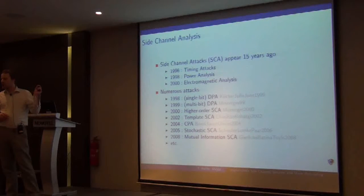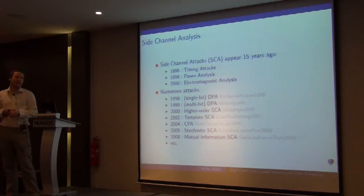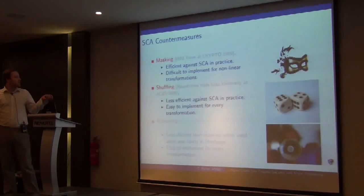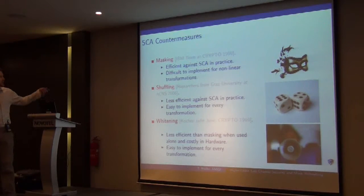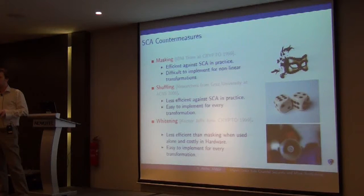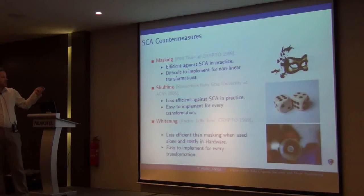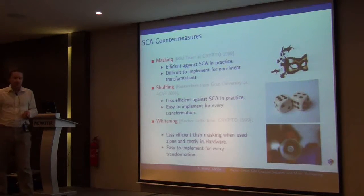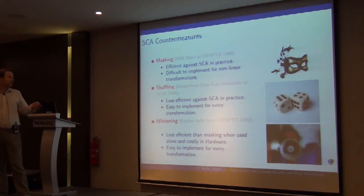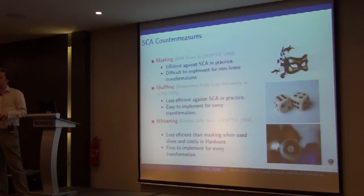We will mostly talk about higher order side channel analysis, meaning that we will consider that the attacker is able to observe several internal states during the cryptographic execution. The main countermeasures against side channel analysis are the masking techniques, shuffling and hiding. We will talk about masking here, which is certainly the most secure way to counteract side channel analysis, but still pretty expensive in practice. Shuffling and hiding are cheaper techniques but don't enjoy security proofs as masking techniques. Shuffling is randomizing the instructions and hiding is adding some noise to the side channel measurements.